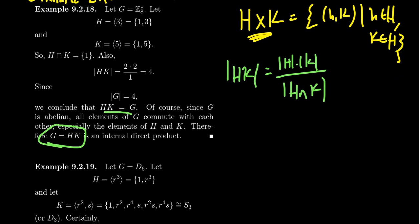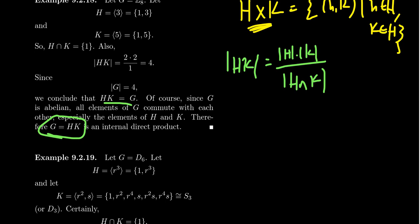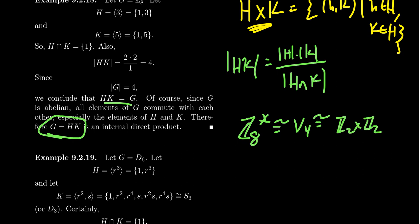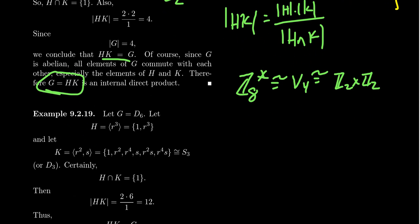I want to make a comparison here. This group Z8* is isomorphic to the Klein 4-group, which is Z2 cross Z2. H is a cyclic group of order 2 and K is a cyclic group of order 2, and we're saying G is an internal direct product of two cyclic groups of order 2. That's not a coincidence — we'll see before the end of this video that it's actually to be expected.